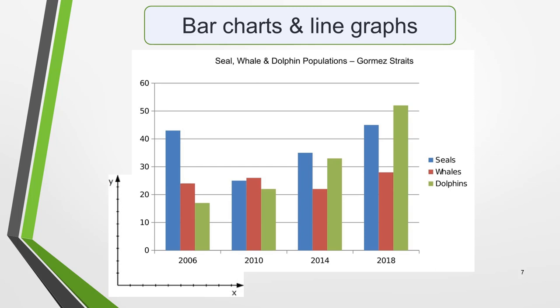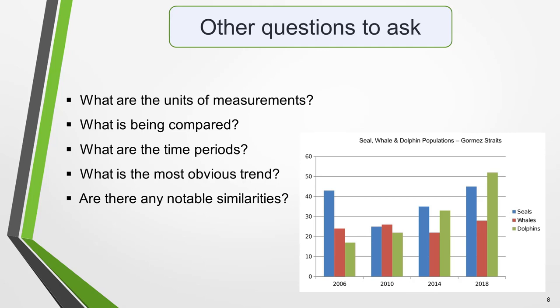Question 2: what information do the two axes give? The chart or graph will have a vertical axis and a horizontal axis, often called the X and Y axes, and each gives a different type of information. In our example, the X axis tells us the years in which the numbers of seals, whales and dolphins were recorded, and the Y axis shows how many were recorded. You also need to know what units of measurement are being used — these could be many different things, for example an amount, time, age, or percentages. The measurements on our example bar chart are the amount in single numbers and time in years.